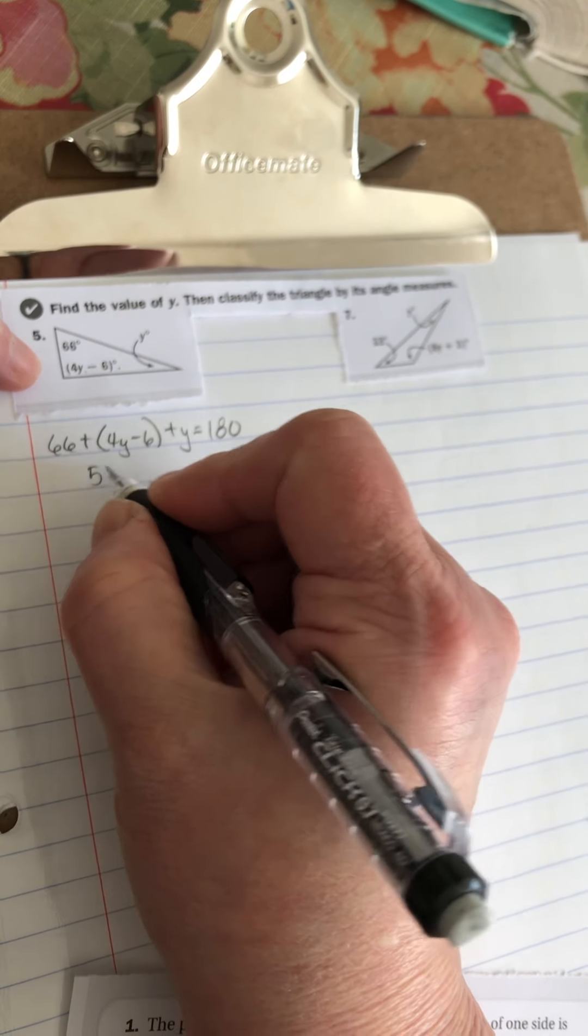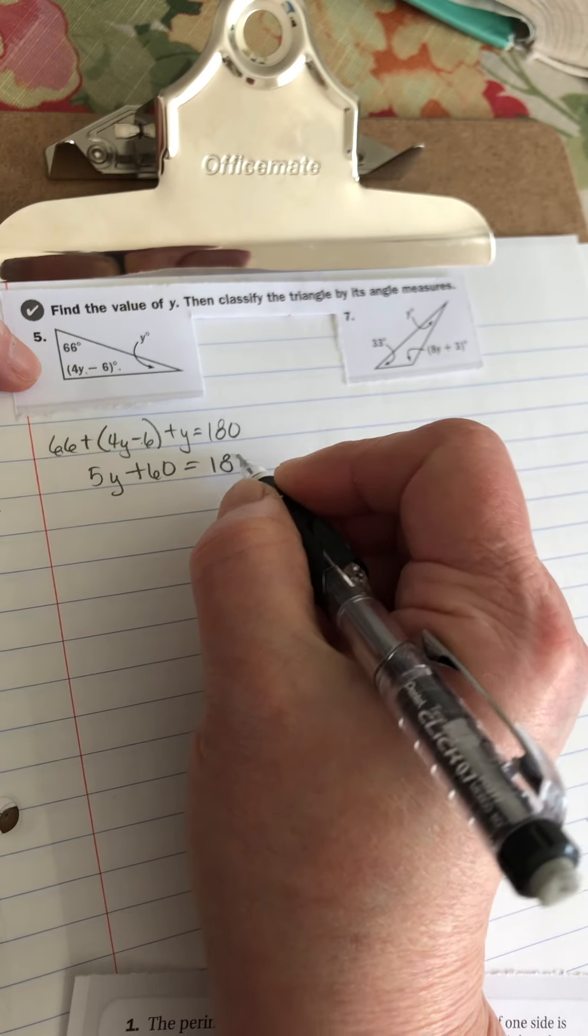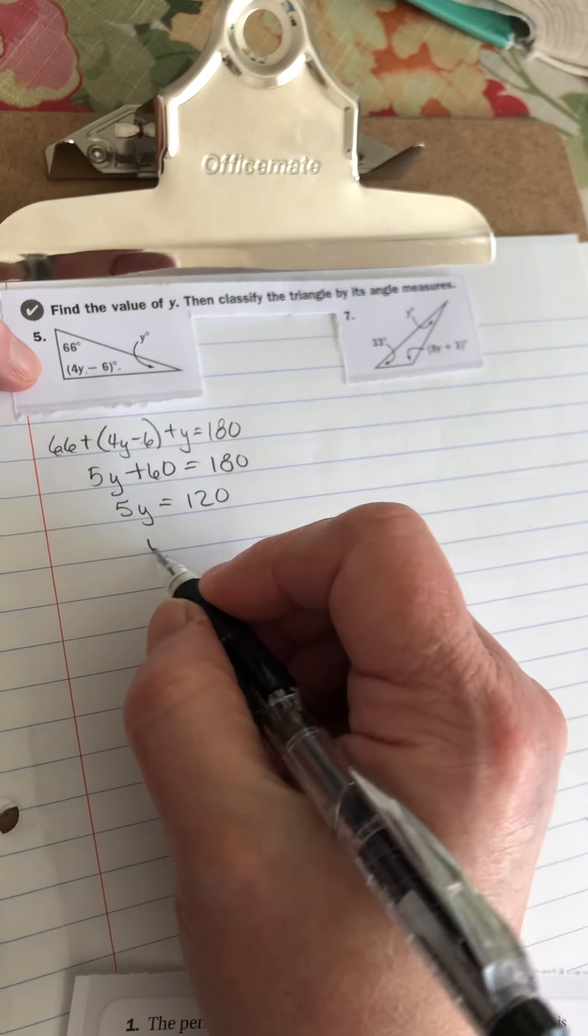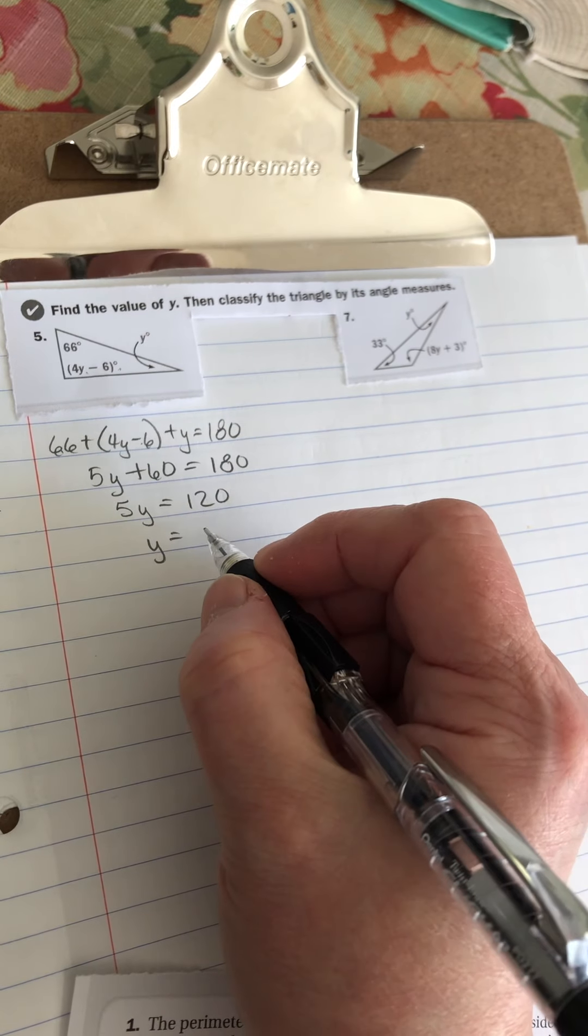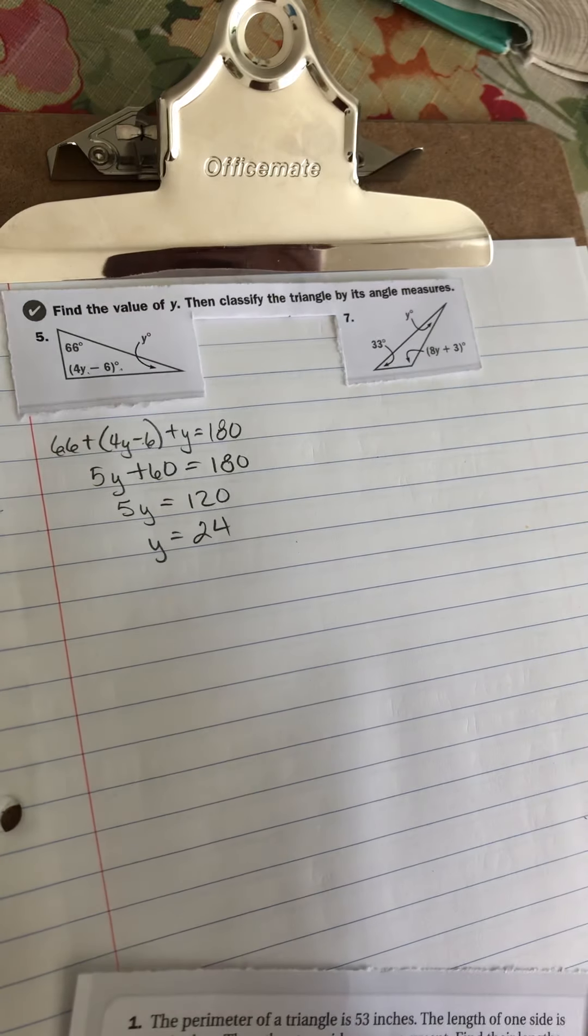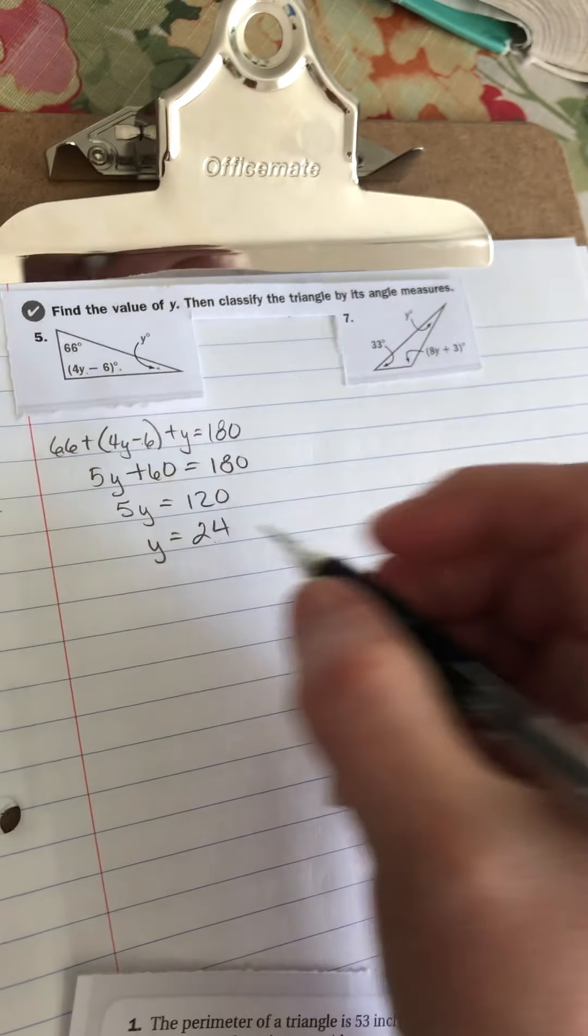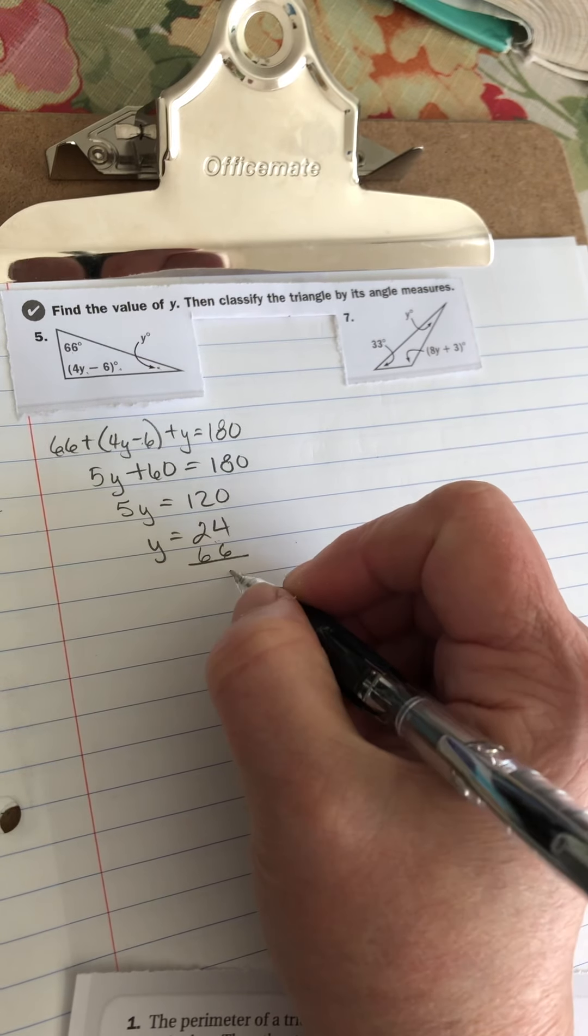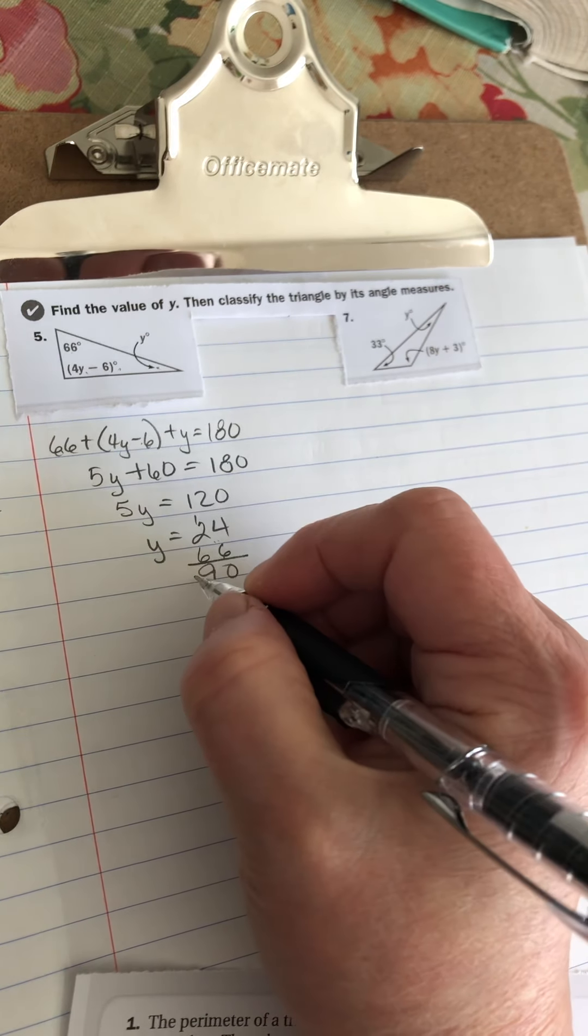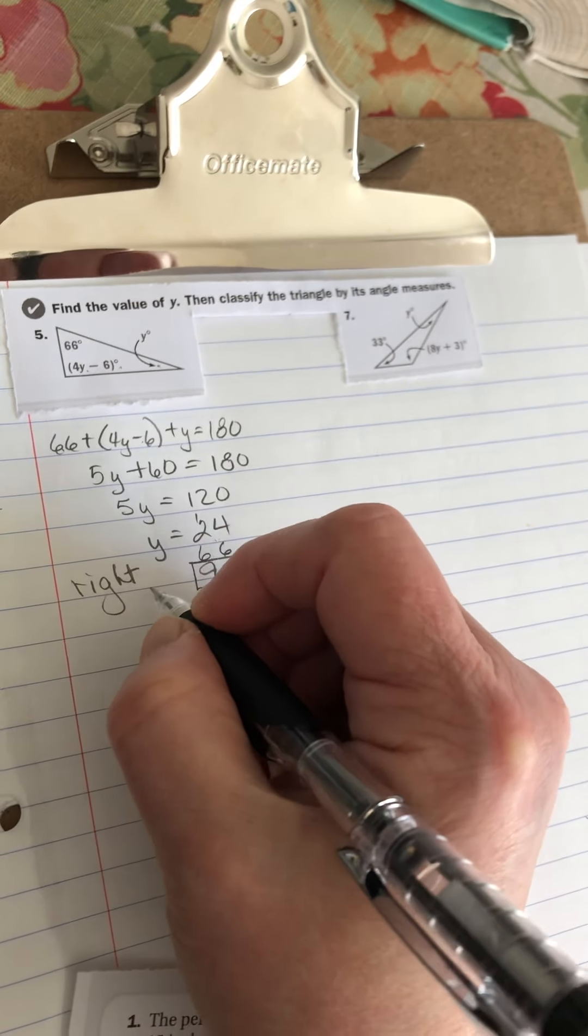Add up to 180 degrees. So I want to simplify. So 5y, 66 minus 6 is 60, equals 180. Subtract 60 from both sides. 5y equals 120. Divide by 5. And you could do that in your head, but if you can't use your calculator. That equals 24. So this one angle is 24 degrees. So it's acute. This one's acute, but they have to add up to 180. What's the other one? So this adds up to 90 degrees. Guess what 4y minus 6 is? 90 degrees because 90 plus 90 is 180. So it is a right triangle.